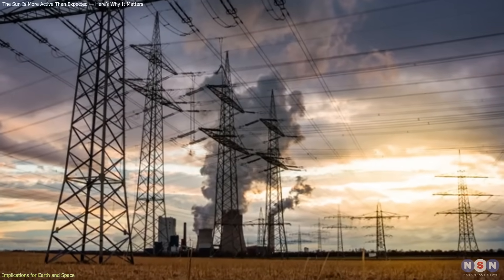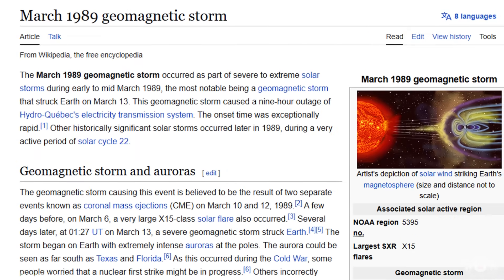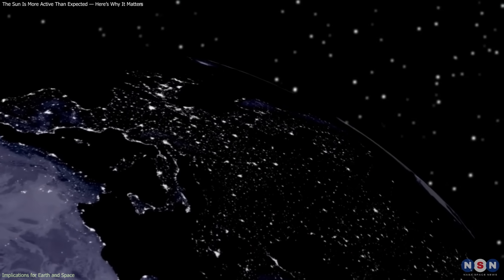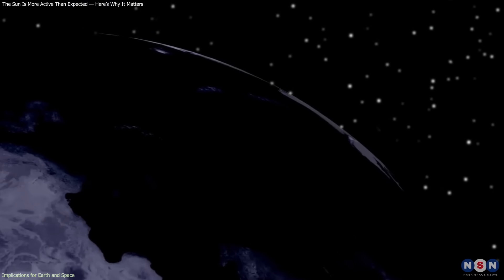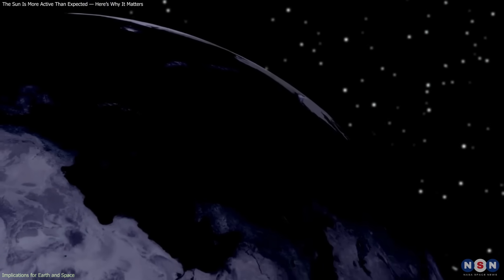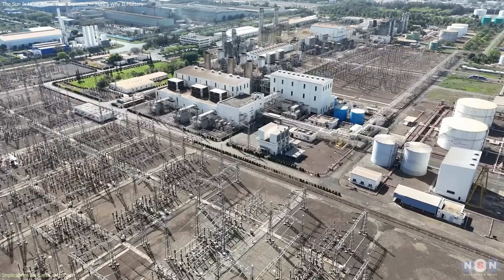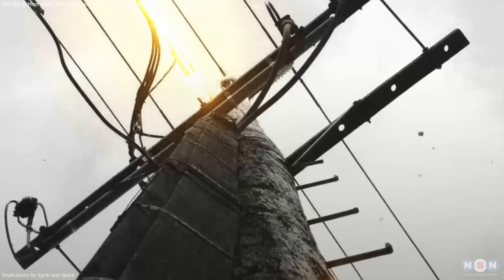Power grids are also at risk. The 1989 Quebec blackout, caused by a solar storm, showed how vulnerable infrastructure can be when currents induced by solar activity overload systems. Today's grids, heavily reliant on interconnected networks and electronics, may be even more exposed.